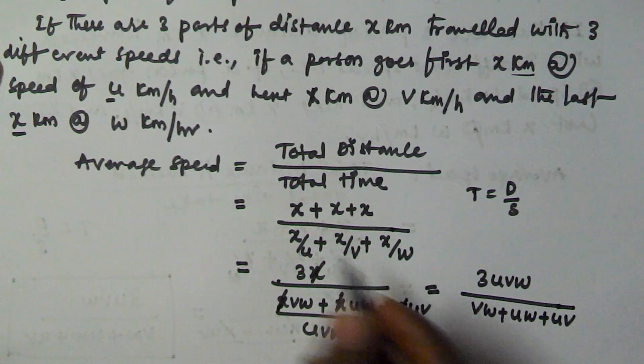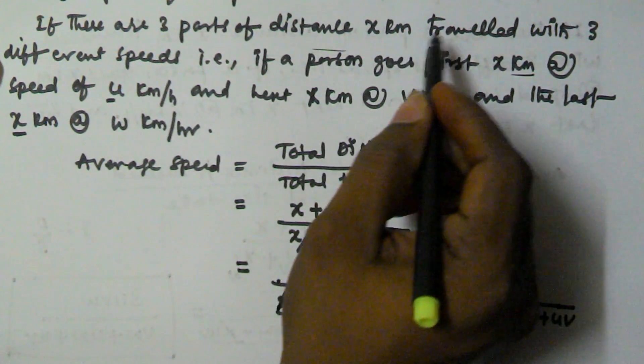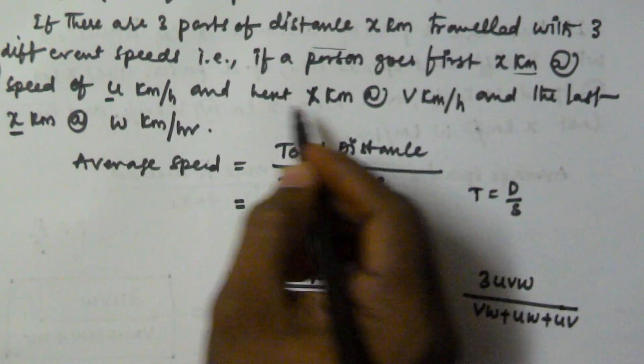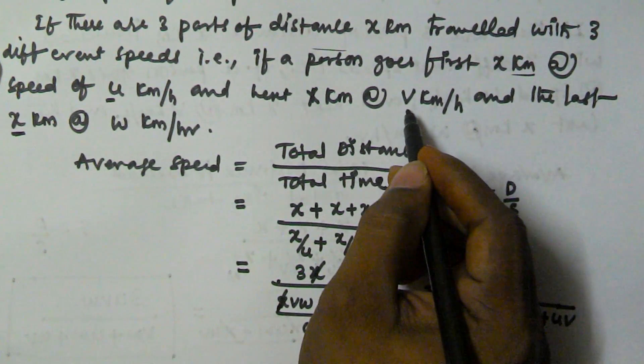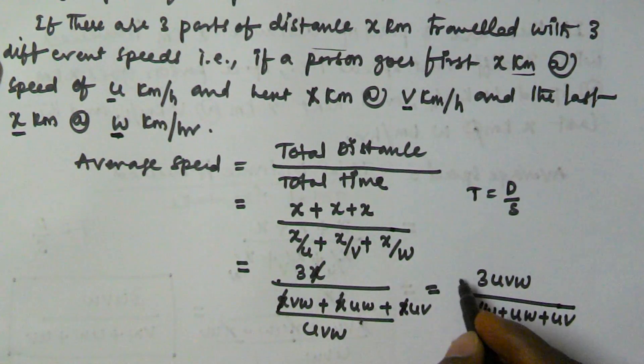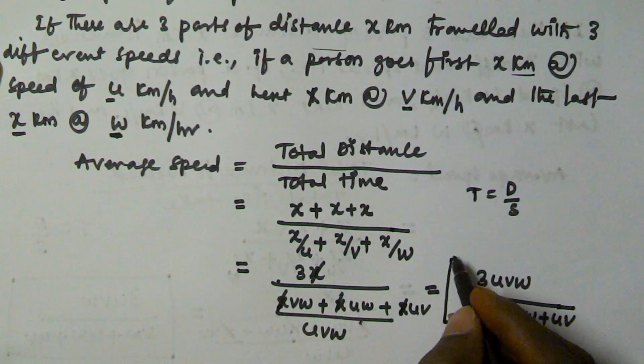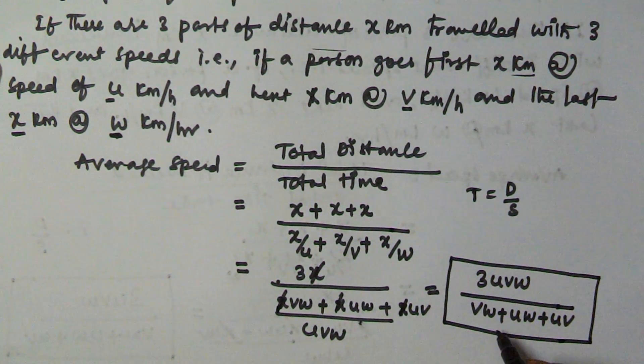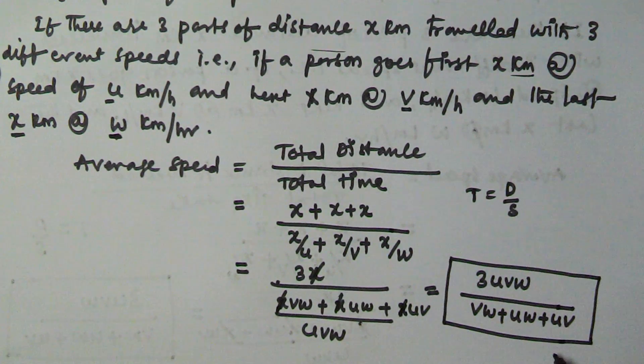So if there are 3 points of distance x traveled with 3 different speeds - first x part with speed u km per hour, second x part with v km per hour, and third x part with w km per hour - then the average of all those 3 speeds is given by 3uvw divided by vw plus uw plus uv. So I hope you got this one. Thank you very much for watching this video. Please subscribe to my channel.